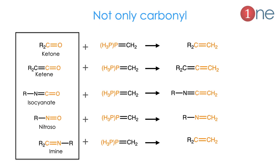A very important point is that the Wittig reaction can be applied to all types of carbonyl systems or imine systems — including isothiocyanate, ketene, isocyanate, nitroso, and imine. The product and the elimination are the same. Not only the standard carbonyl system, but also substituted carbonyl systems give the same Wittig reaction.